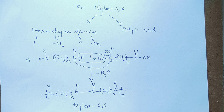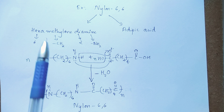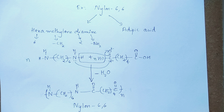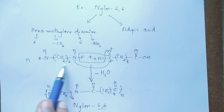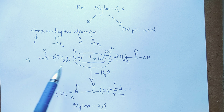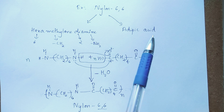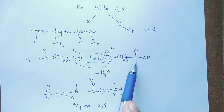Nylon 6,6 is called a copolymer because it contains two types of monomer units. Now, why is it called nylon 6,6? These numbers indicate the number of carbon atoms present in each monomer unit. Hexamethylene diamine contains six carbon atoms. Adipic acid also contains six carbon atoms: four from the CH₂ groups plus two from the two carboxyl groups — four plus two equals six. That's why the name is nylon 6,6.